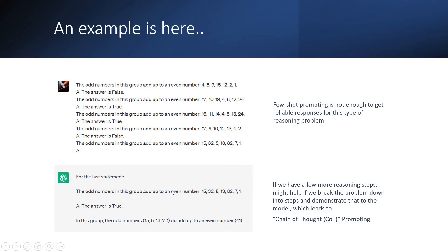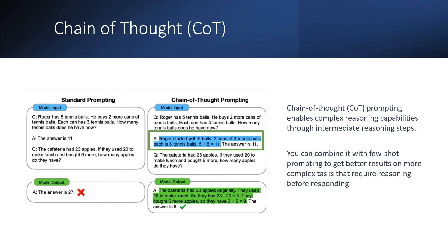So when zero-shot fails we go to few-shot, and when few-shot fails we have the next one — called chain of thought prompting. Let's see an example. We will go with the question using standard prompting and then show how the same thing works with chain-of-thought prompting.